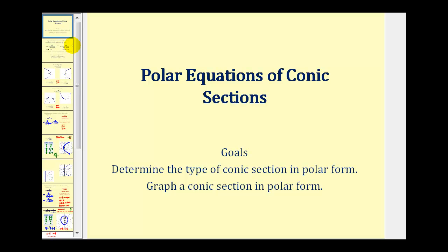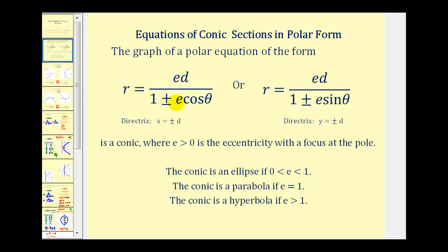Let's start with a quick review. If we have a polar equation in either of these two forms, we will have a conic section with eccentricity e. If our denominator is one plus or minus e cosine theta, we'll have a vertical directrix at x equals plus or minus d. And if our denominator is one plus or minus e sine theta, we'll have a horizontal directrix at y equals plus or minus d.